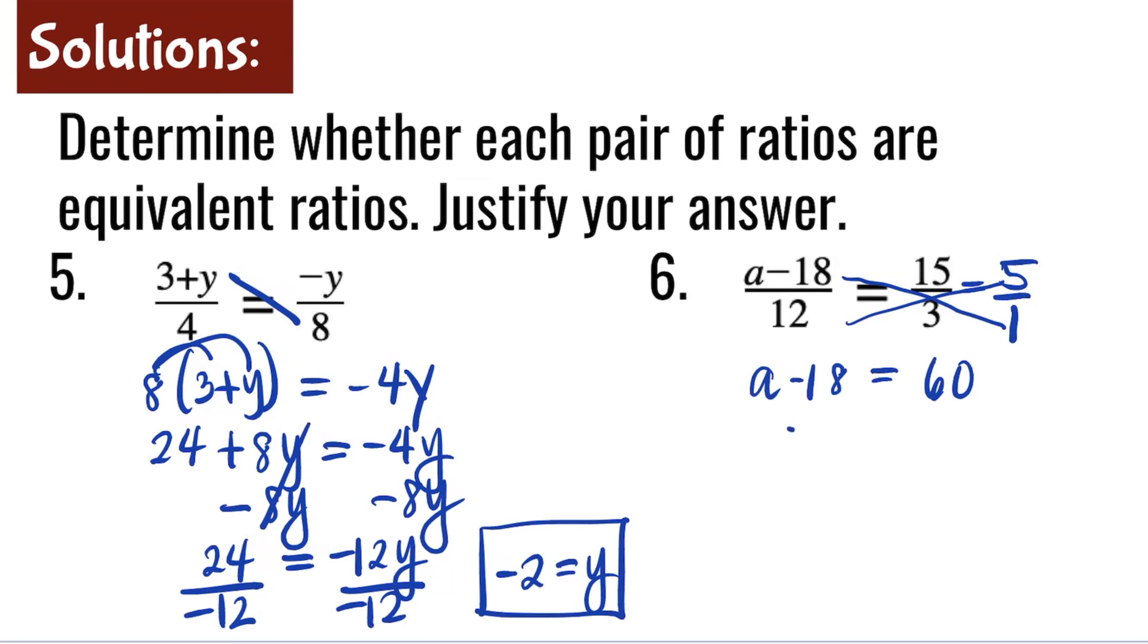Solving for a, we need to add 18 to both sides. Negative 18 plus 18 is 0. So left side is a. And the right side, 60 plus 18 is 78. So the a value is equal to 78.